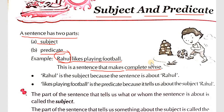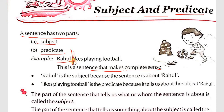For example, 'Playing for the boys' has no complete sense. But 'Rahul likes playing football' is a complete sentence. You can see it is divided into two segments: 'Rahul' is the first segment, and 'likes playing football' is the second segment.